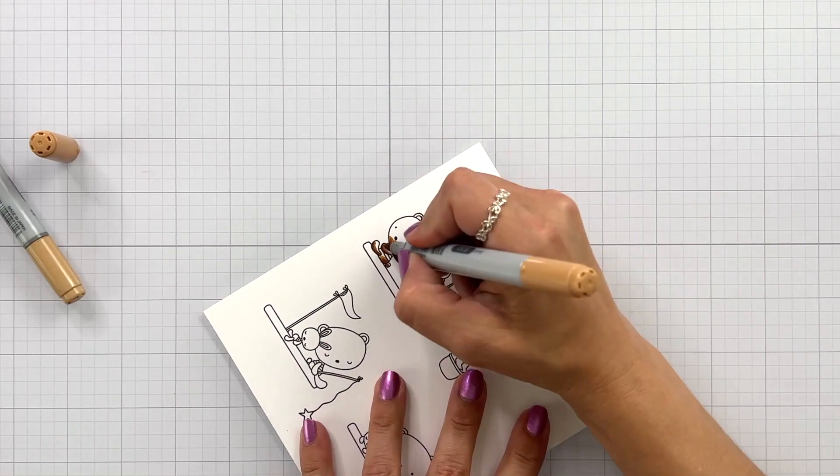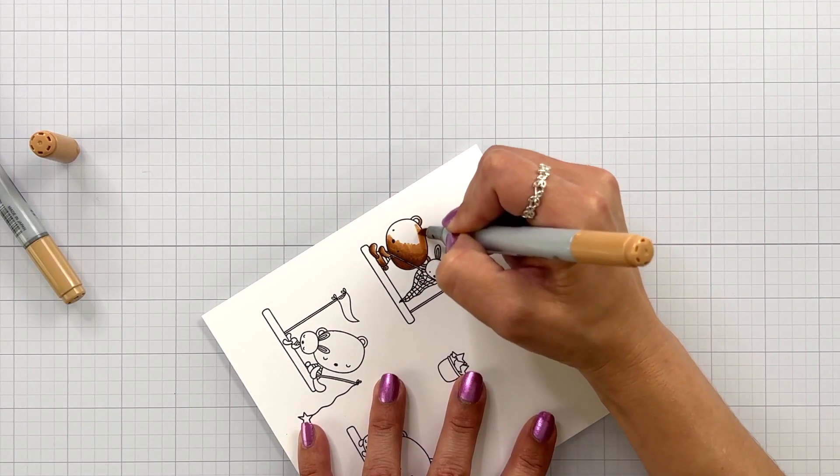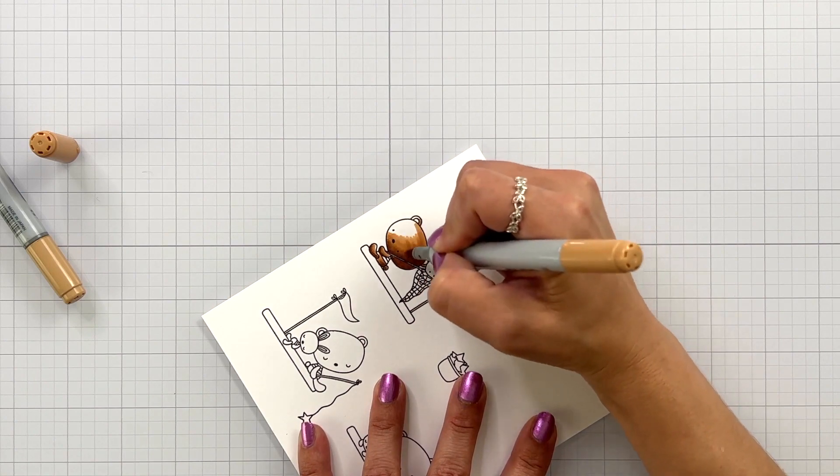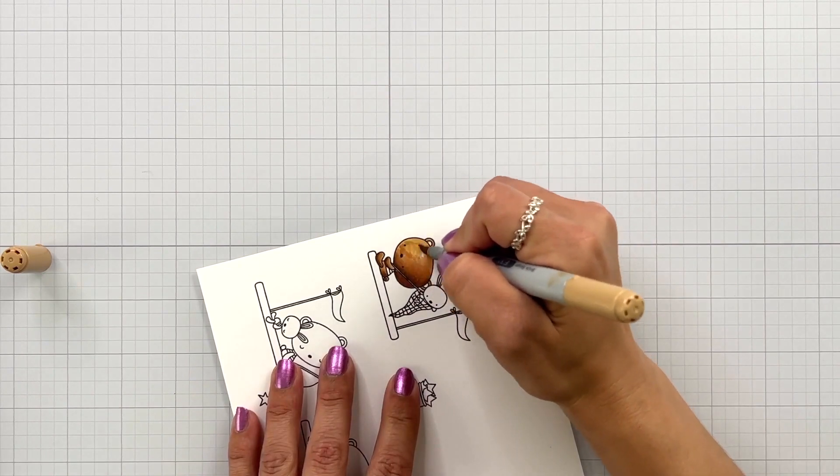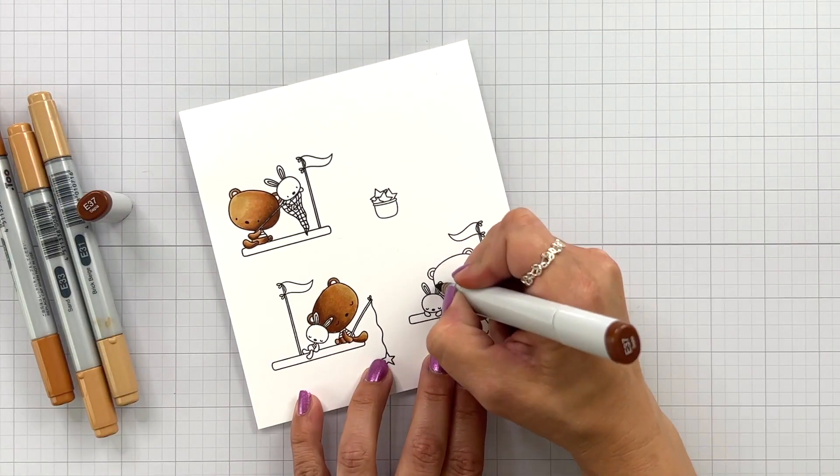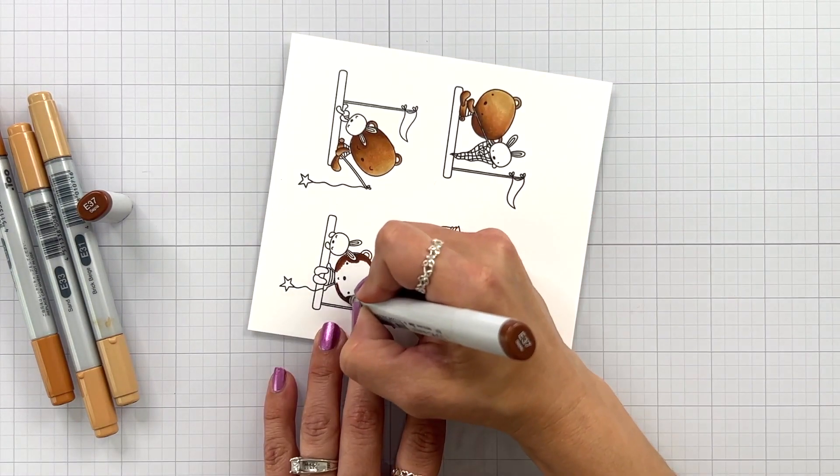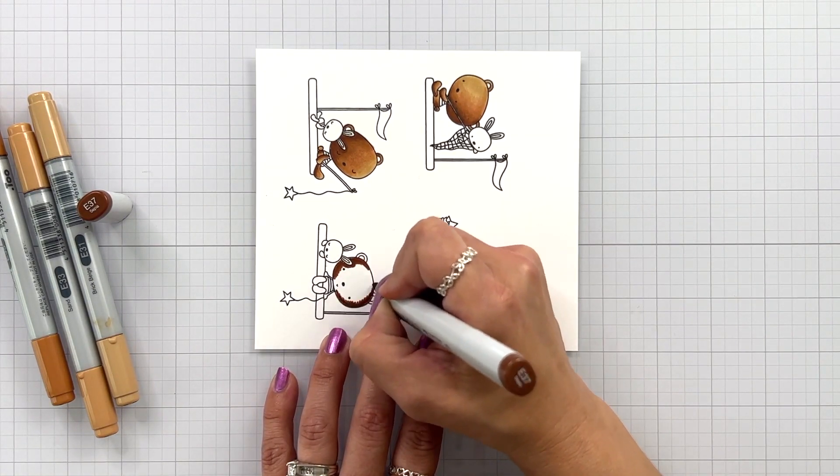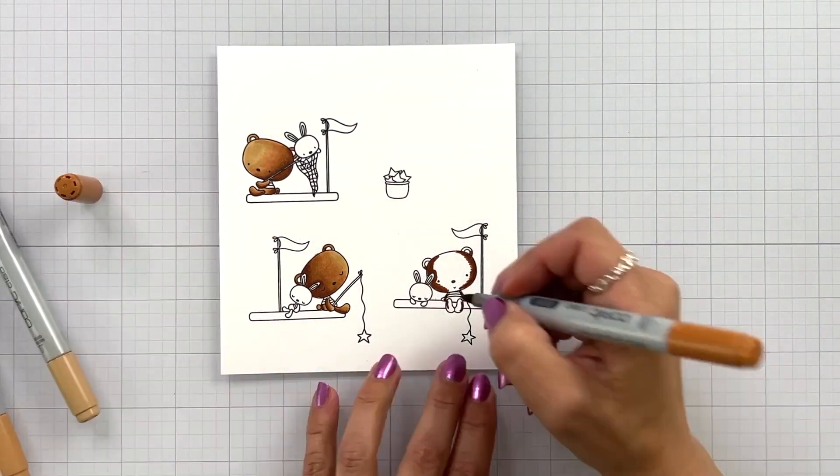Since this particular bear is facing to the left I'm going to put the darkest area or the shadow area on the right and then blend that out with the remaining colors. My second bear right underneath it is facing the opposite direction so I skipped that in the video and went over to the bear that is facing forward.